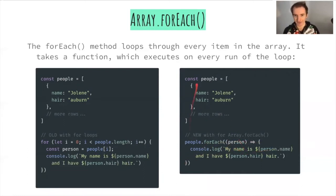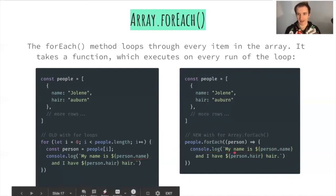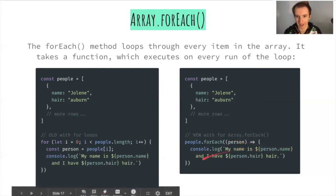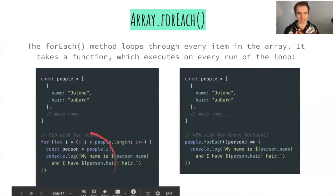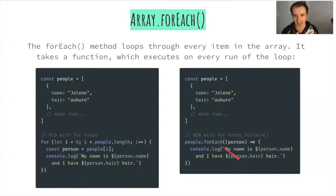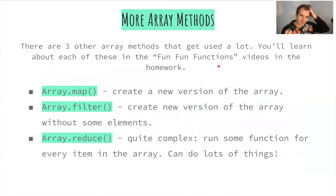The `forEach` method takes a function, whose argument is each element in turn. The first time it runs it takes the first element, the second time the second, and so on — logging out name and hair for each person. This is far easier than the old for loop syntax.